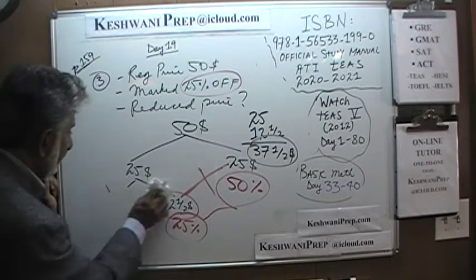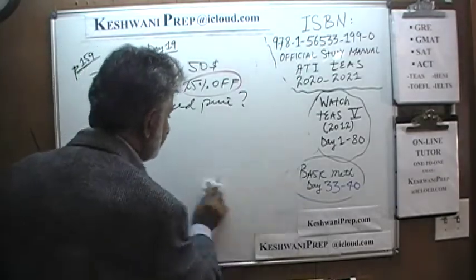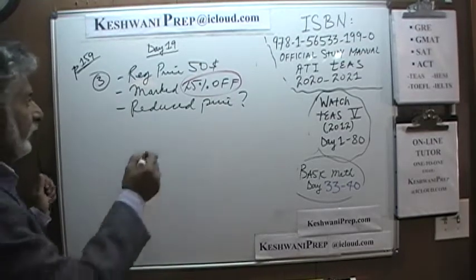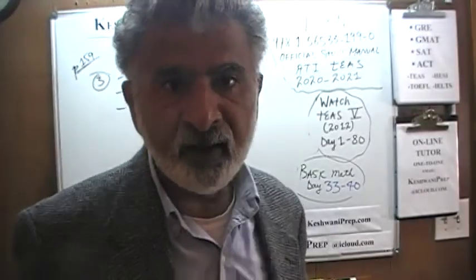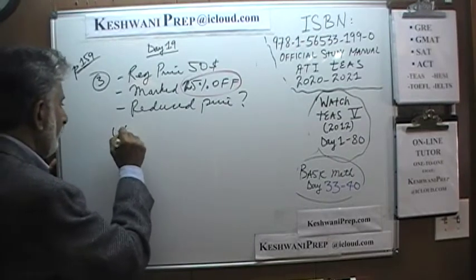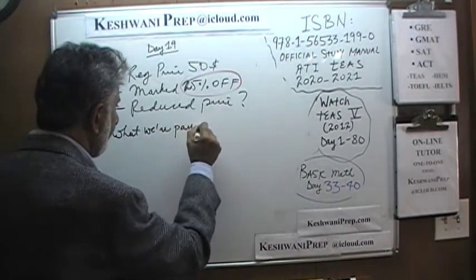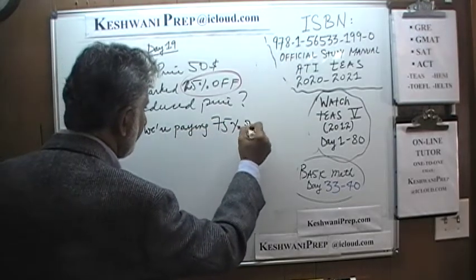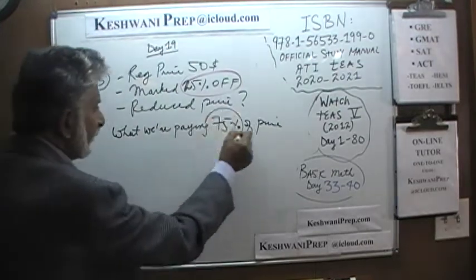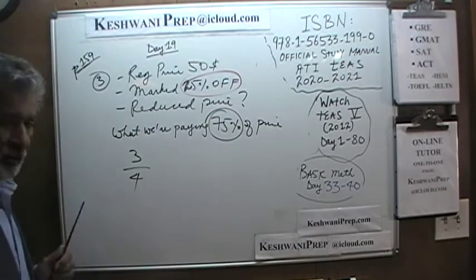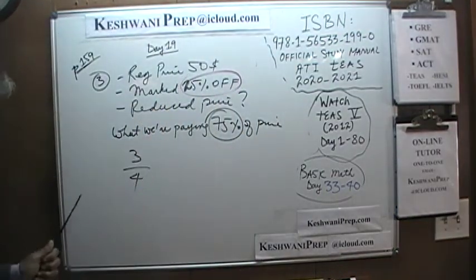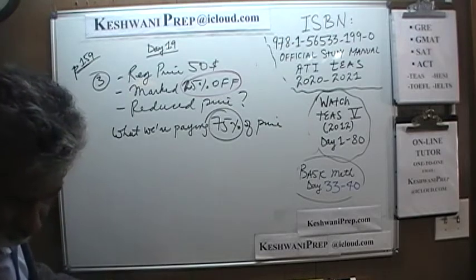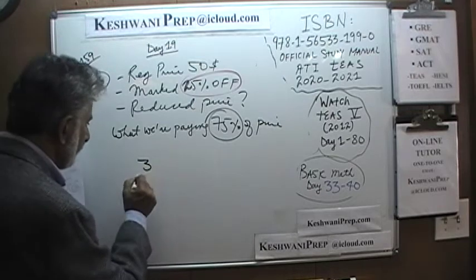Another way we could have solved the same problem: instead of making it complicated, simply understand that if something is 25% off, then what we are paying is 75% of the price. 75% of something is three-quarters. One quarter is 25%, two quarters is 50%, three quarters is 75%. All we have to do is figure out three-quarters of 50. Let's divide top and bottom by two — the four becomes two and 50 becomes 25.